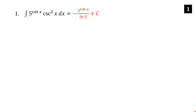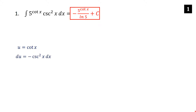The answer is minus 5 to the cotangent x over ln 5 plus C. Let's backtrack and fill in the details. If we let u equal the cotangent of x, then du is negative cosecant squared x dx. What's missing is the minus sign that needs to be part of du, so we put in the minus sign and undo that by putting a minus sign outside the integral.